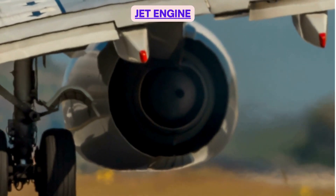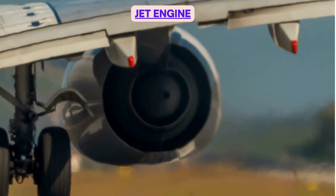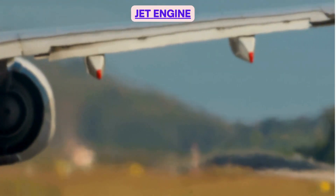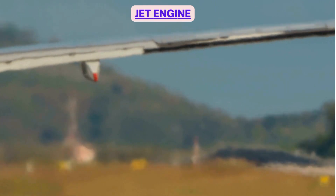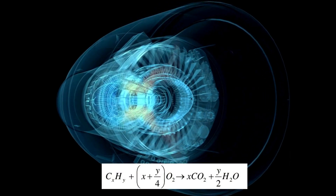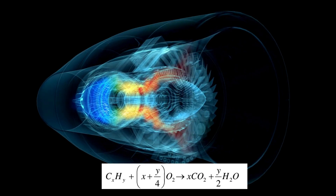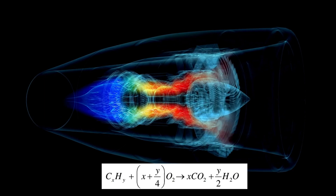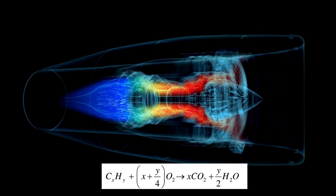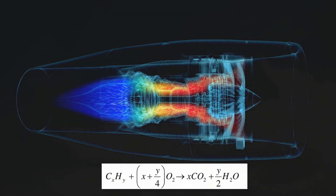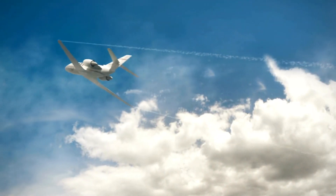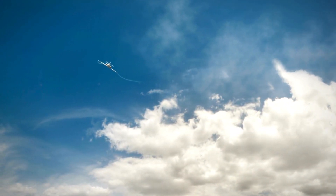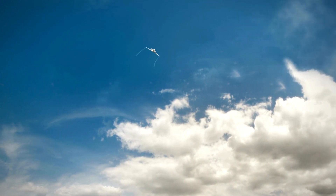In a jet engine, aviation turbine fuel, which is a hydrocarbon, is burned to produce the required thrust. Chemically, the hydrocarbon reacts with oxygen to produce carbon dioxide and water vapor. This water vapor, carbon dioxide, and heat are exhausted into the atmosphere from the jet engine exhaust. The addition of water vapor increases the relative humidity, while the addition of heat increases temperature and reduces relative humidity — so both act against each other.